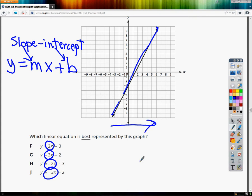So as you can see, H and J both have negative slopes, so they cannot be the answer because this is a line with positive slope. So it has to be either F or G.